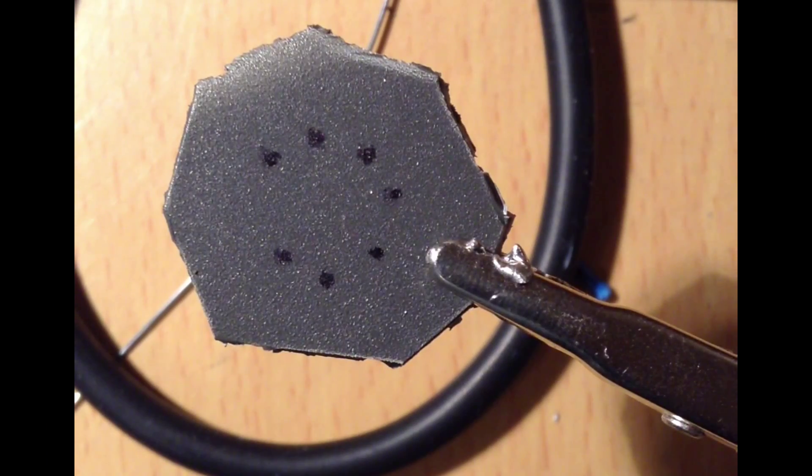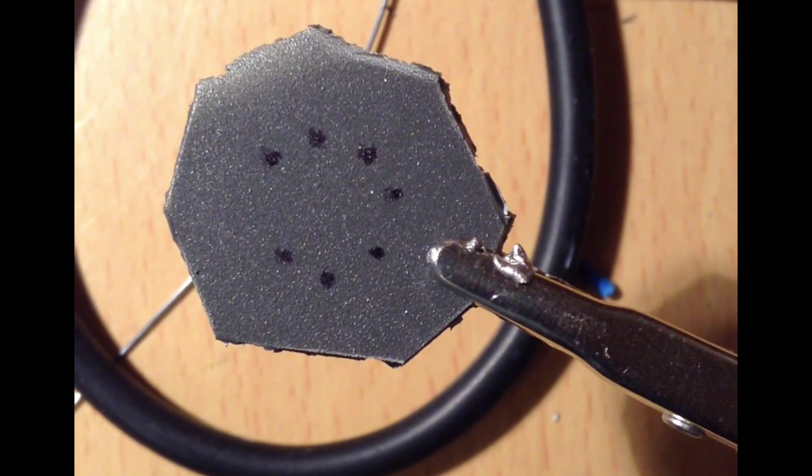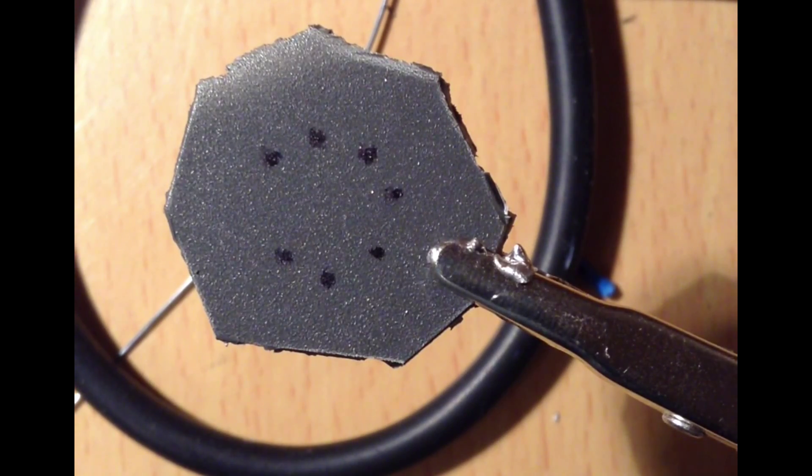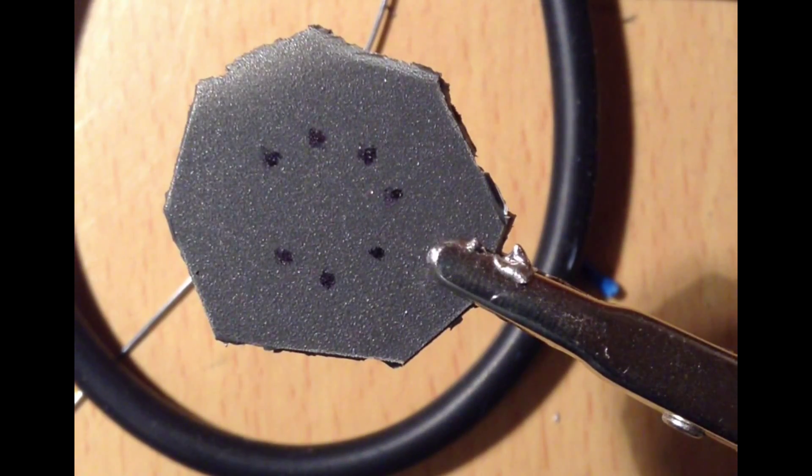Now that I have the base stenciled with the vacuum tube pin holes, I'm now going to make the holes. Now this is a bit hard with a drill, because you need to be very precise. So, I have put an extended tip on my soldering iron, and this really works.